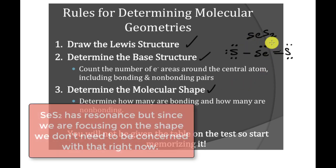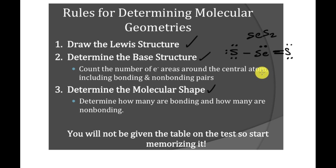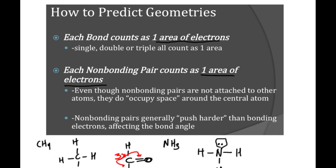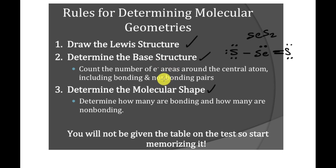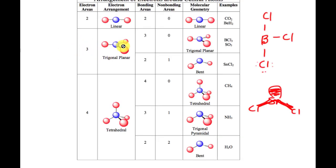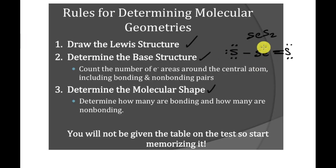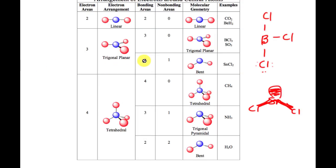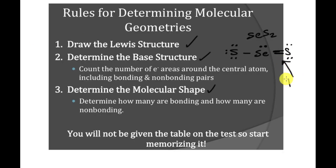For SO2: what is my base structure? I count the areas of electrons around the central atom: one, two, three. Remember, I count double bonding and single bonding as the same, and I count lone pairs. That's step two — three areas gives a base trigonal planar structure. Step three: I figure out how many are bonding and how many are non-bonding — two bonding and one non-bonding. I look on my chart: two bonding, one non-bonding — my shape is bent. So this molecule has a bent shape. You don't have to draw it — you just have to say bent.